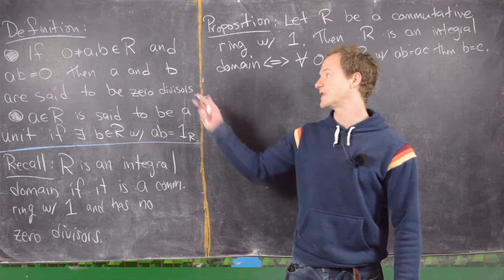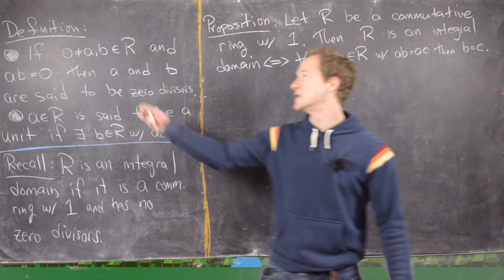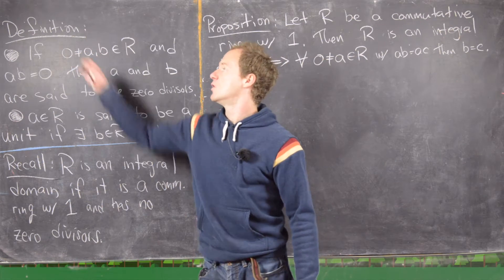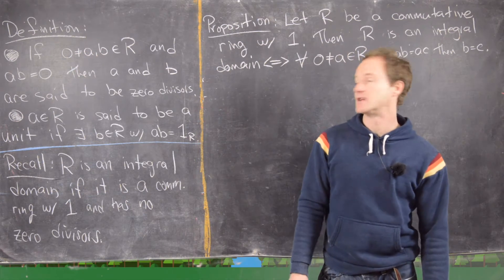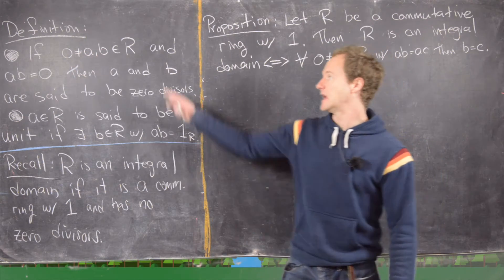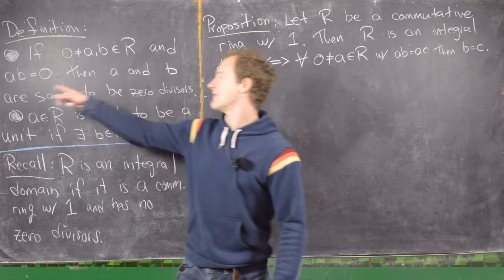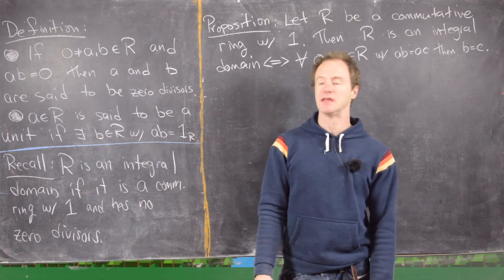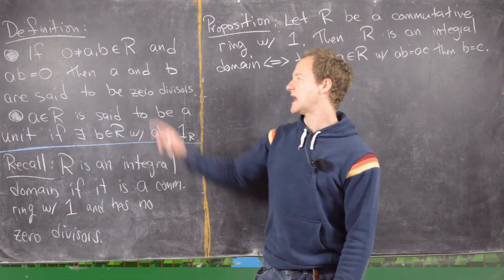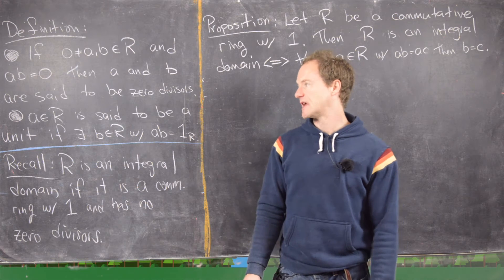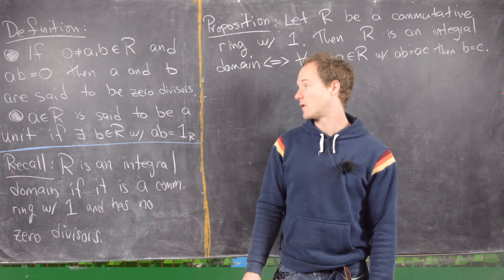For the definition of a zero divisor: if we have A and B which are neither of them zero in a ring R, but we have the equation A times B equals zero, then A and B are said to be zero divisors of R.